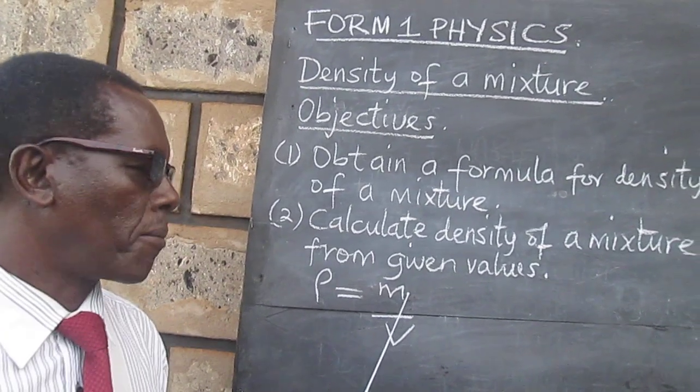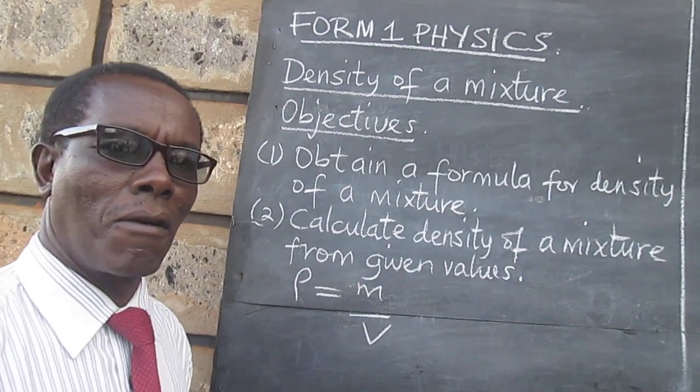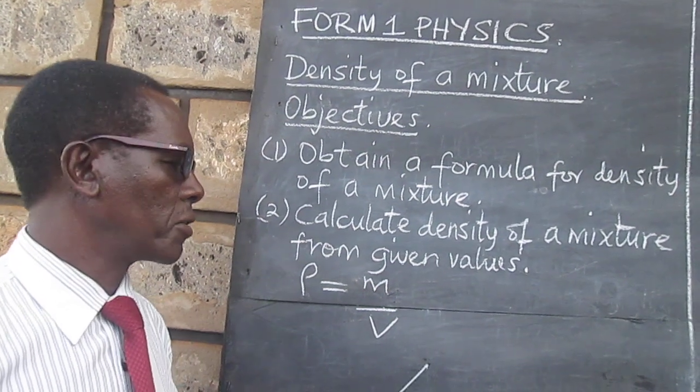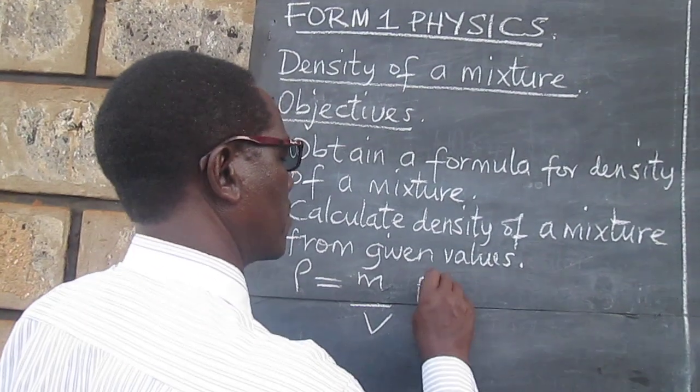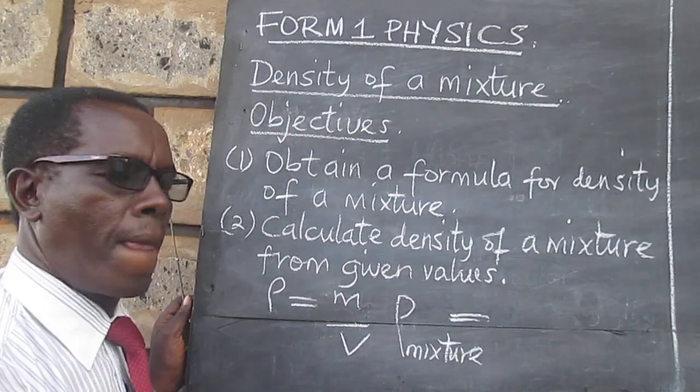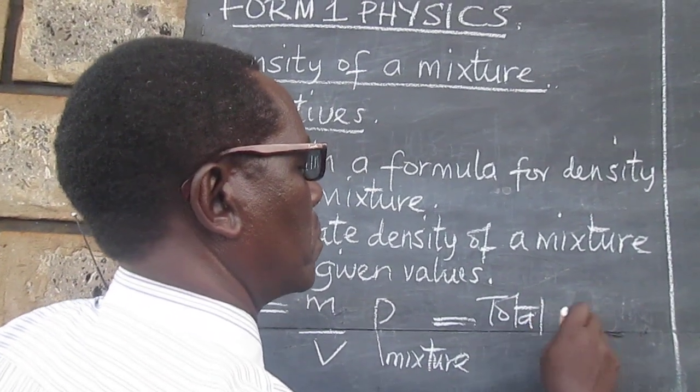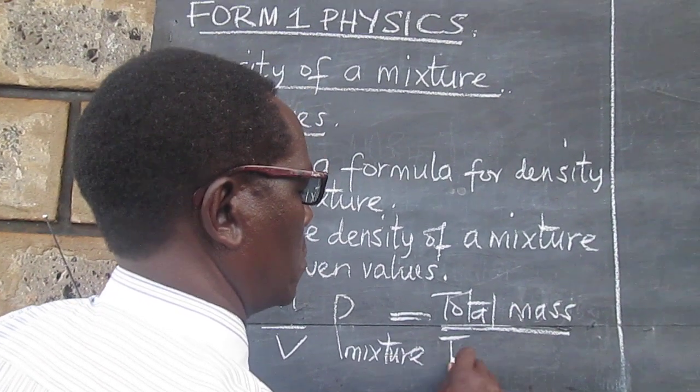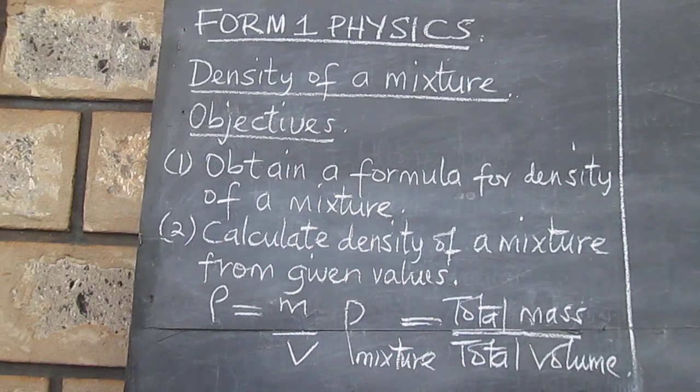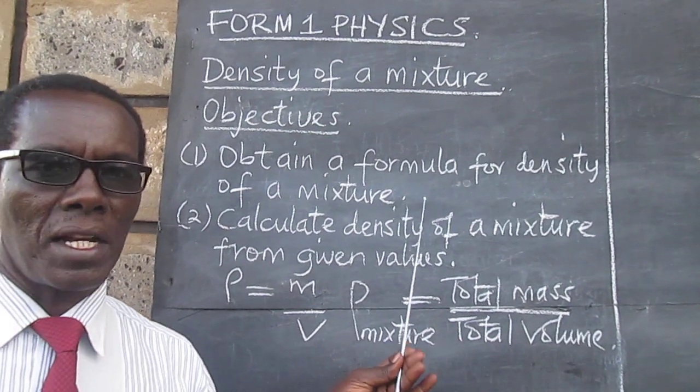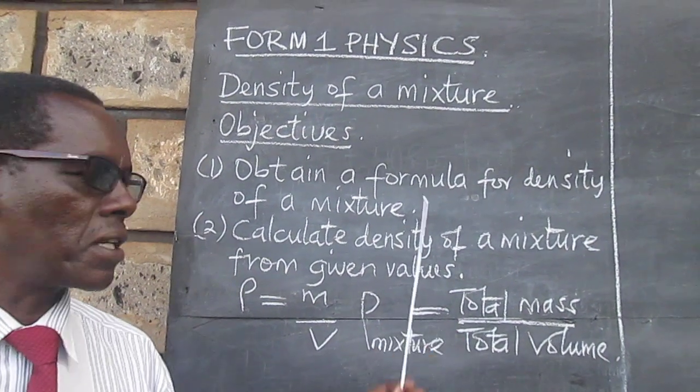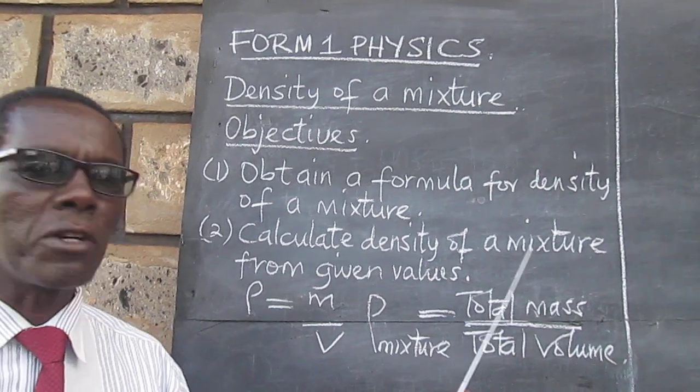Now, for the mixture, the mass will have to be the total mass of the liquids that are being mixed. In this case, we are looking at a mixture of liquids. So, the density of the mixture will therefore be equal to... We will get the total mass by adding the mass of one liquid to the mass of the other liquid, and total volume by getting the individual volumes of the liquids being mixed.